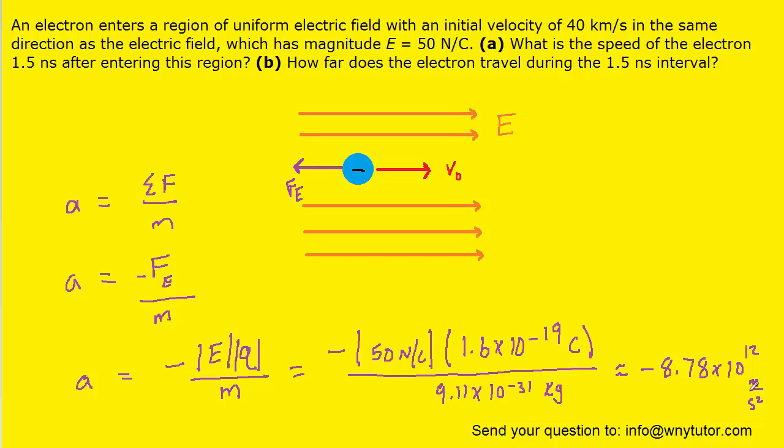Now, the question isn't asking us for the acceleration. It wants the speed of the electron 1.5 nanoseconds after entering the electric field. And so, we're not yet done with part A, but we can turn next to kinematics to calculate that final speed.